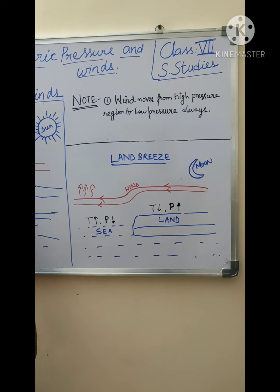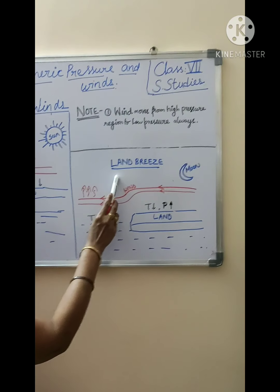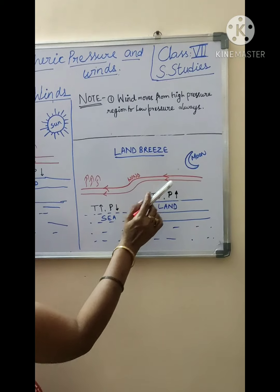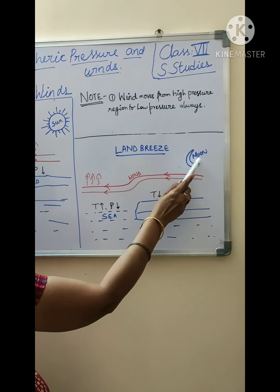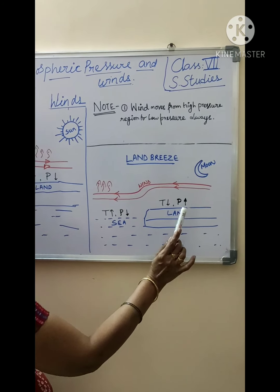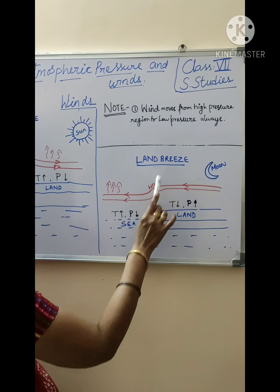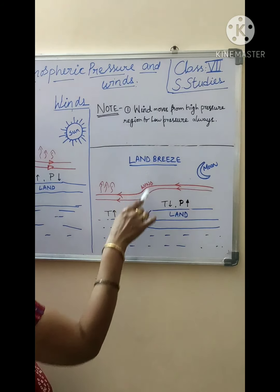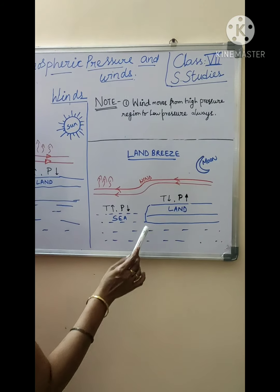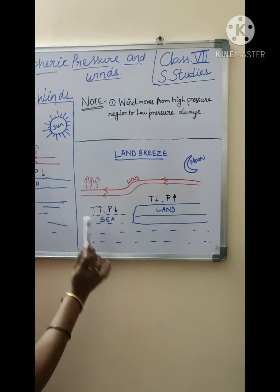I have explained the sea breeze diagram. Now I will explain the land breeze diagram. First, note that there is a moon. We see the moon only in the night time, so land breeze always takes place at night. We will look at the sea side — here we can see the sea water.